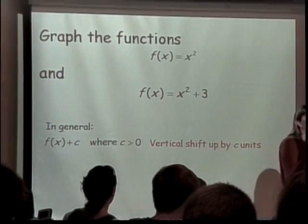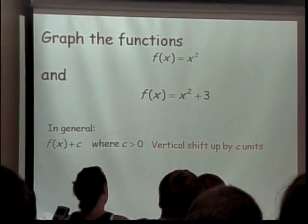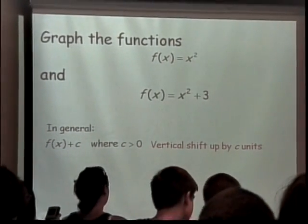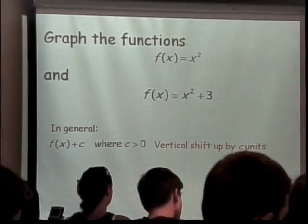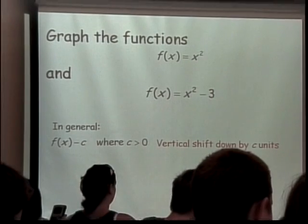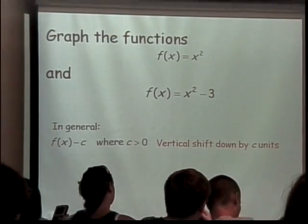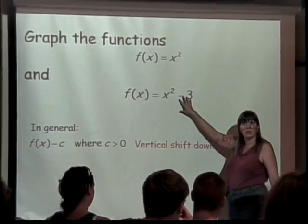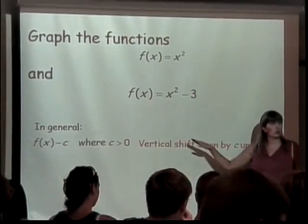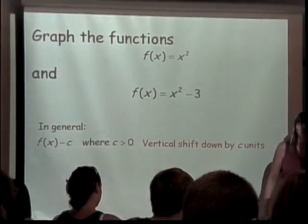What would happen if it was f of x equals x squared minus 3? It would go below, it would go down. It's still outside the function. So it's a vertical thing, but it would go down because I'm subtracting a positive number, subtracting 3.